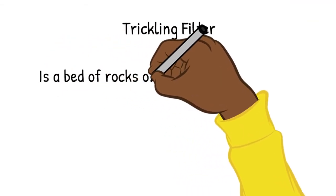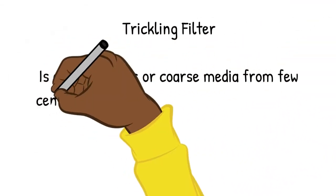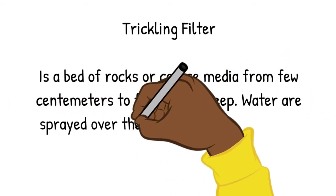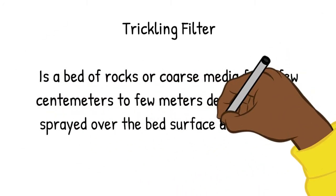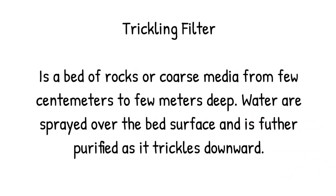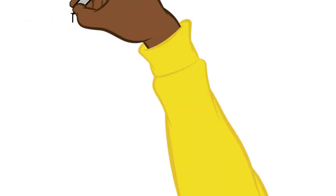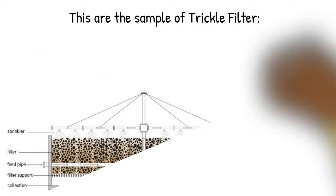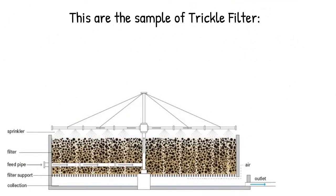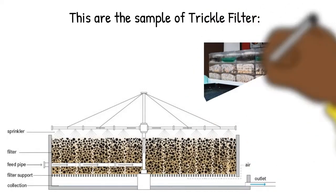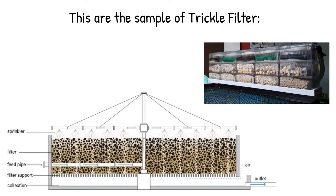A trickling filter is a bed of rocks or coarse media, ranging from a few centimeters to a few meters deep. Water is sprayed over the bed surface and is further purified as it trickles downward. These are samples of trickling filters — one typically used in large systems and another used for smaller aquariums.